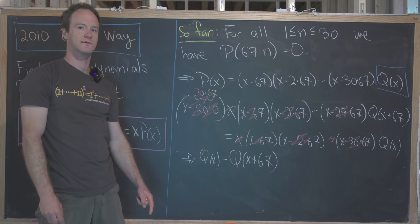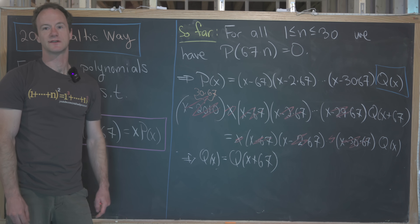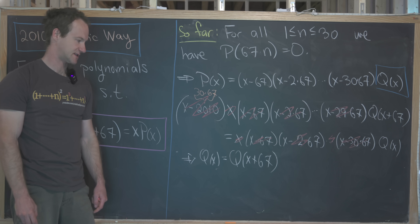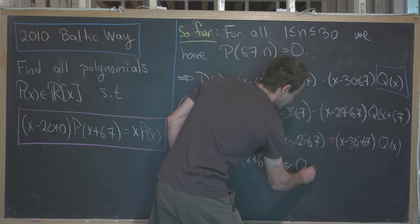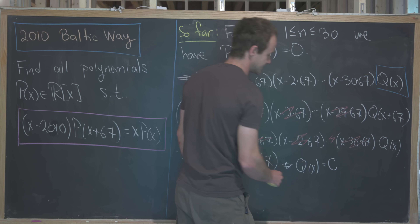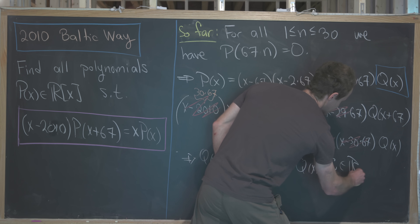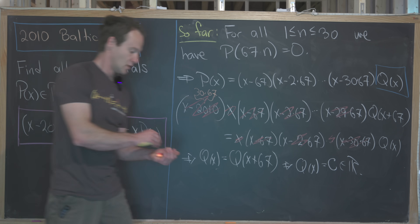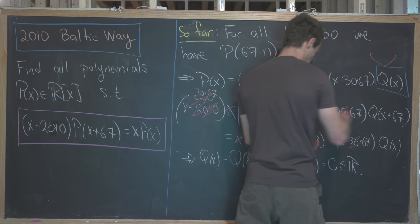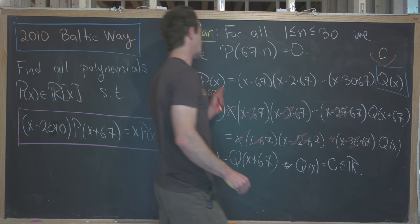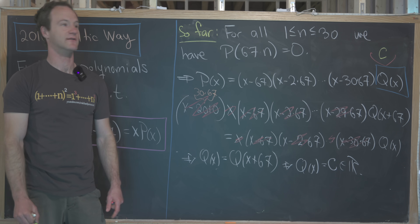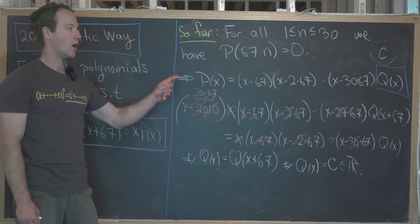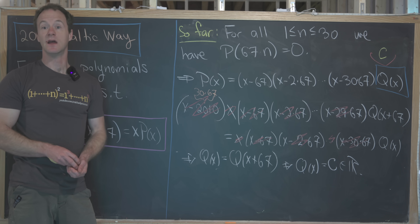After cancellation, we're left with q(x) equals q(x + 67). It's a well-known result that if a polynomial satisfies this kind of rule — shifting the argument by a constant gives the same value — then it must be a constant function. So q(x) is just a real constant. Plugging back in, our final answer is p(x) equals a constant times (x − 67)(x − 2·67)···(x − 2010).